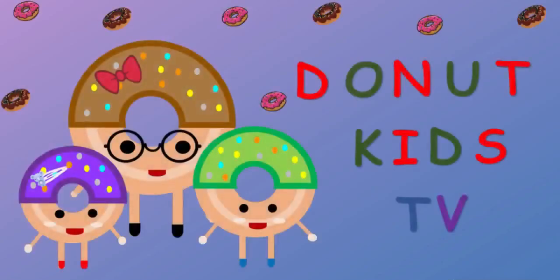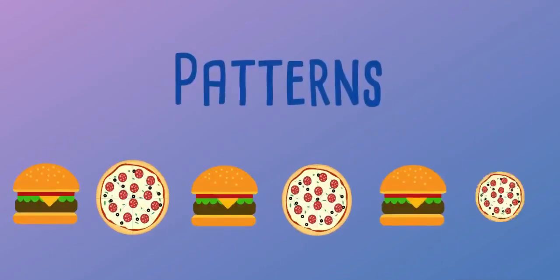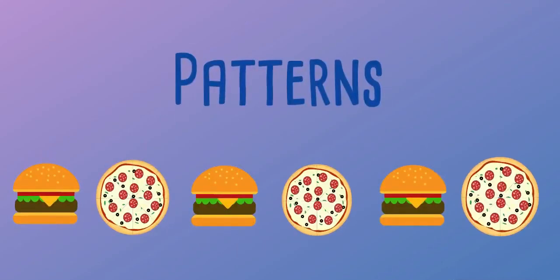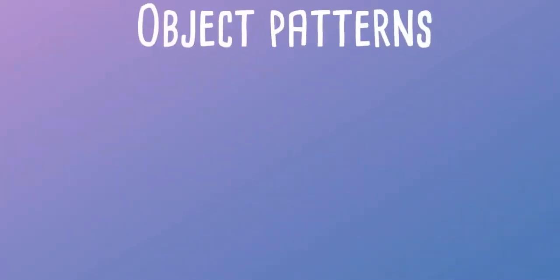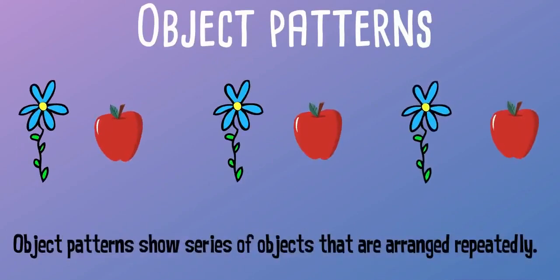Donut Kids TV. Let's understand different types of patterns. We have object patterns. Object patterns show series of objects that are arranged repeatedly.